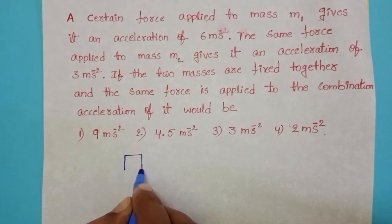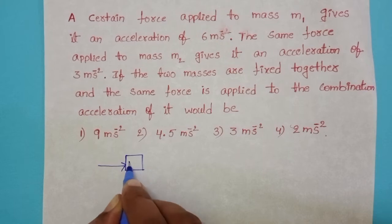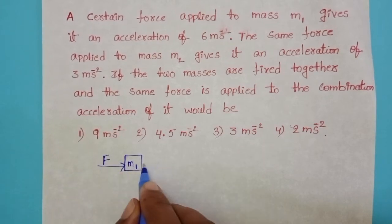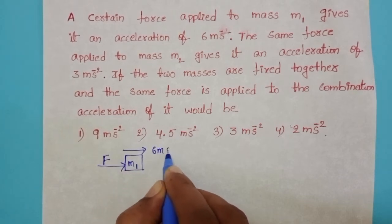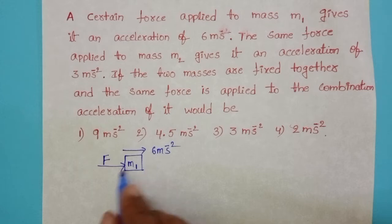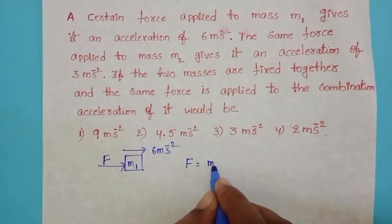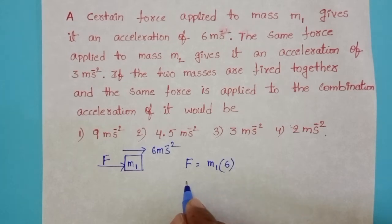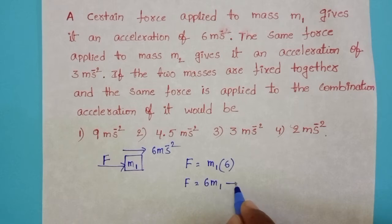Initially, a force is applied on mass M1. Due to this force, M1 accelerates at 6 meters per second square. So from this, F equals M1 times 6 meters per second square, which gives F equals 6M1. Take this as Equation 1.